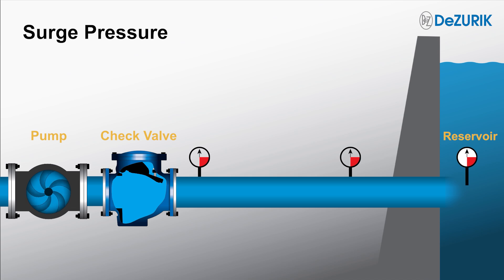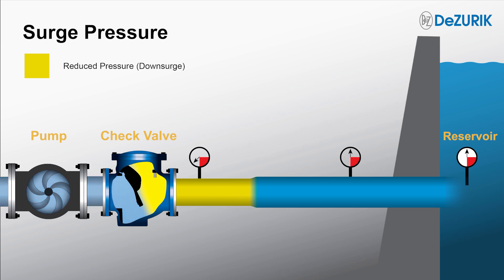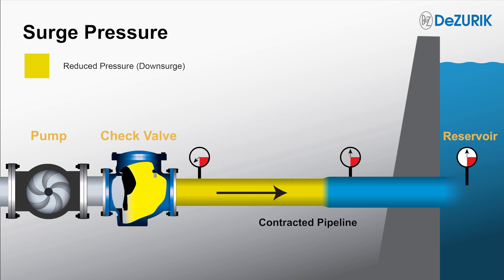The pump begins its shutdown sequence and the fluid flow in the pipeline begins to come to a stop. This velocity change initiates a downsurge, shown in yellow, at a reduced pressure that begins at the pump and travels like a wave down the system to the reservoir.